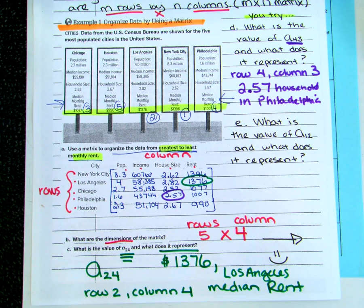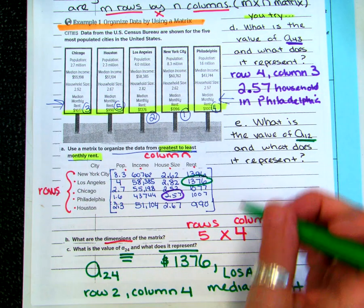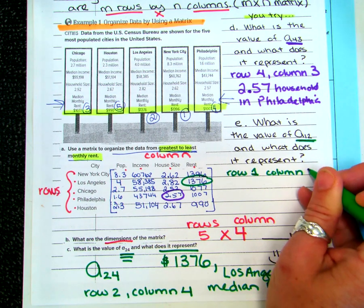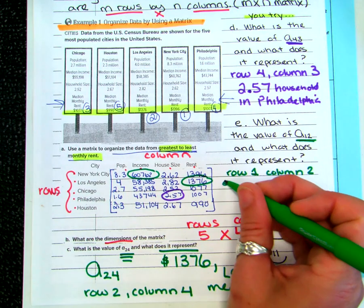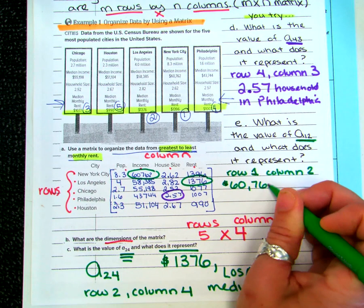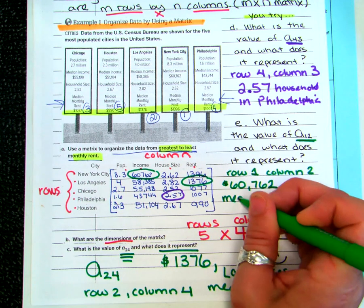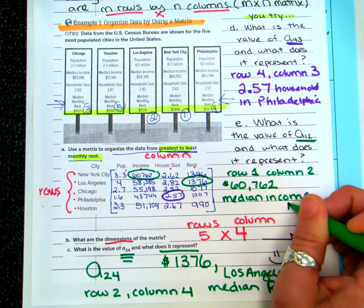One more: A₁₂ means row one, column two. That gives us $60,762. What does that represent? It's the median income in New York City.